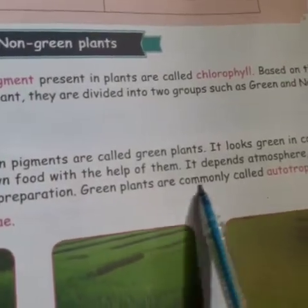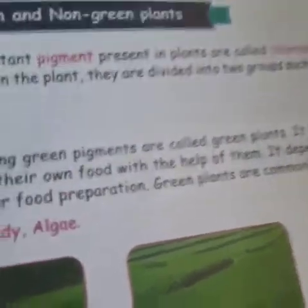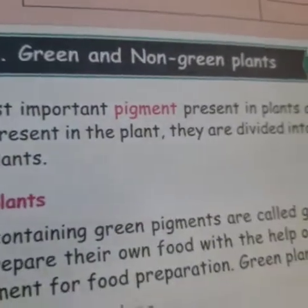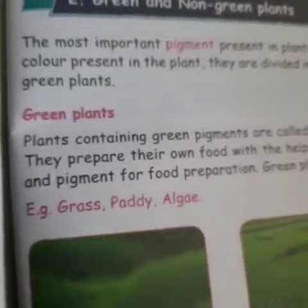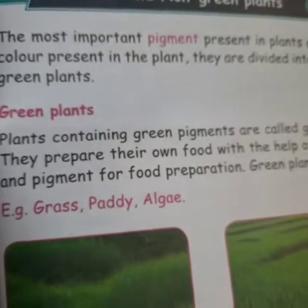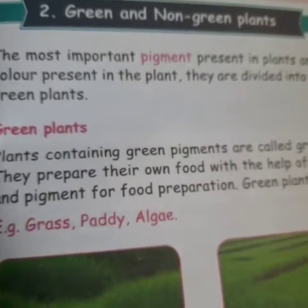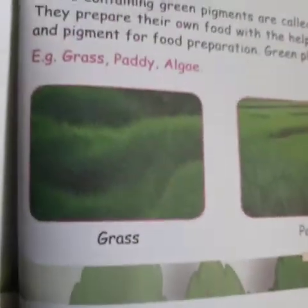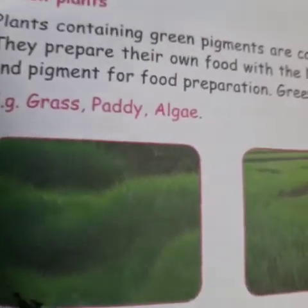Green plants are commonly called autotrophs. They look green in color. Examples of green plants include grass and paddy.